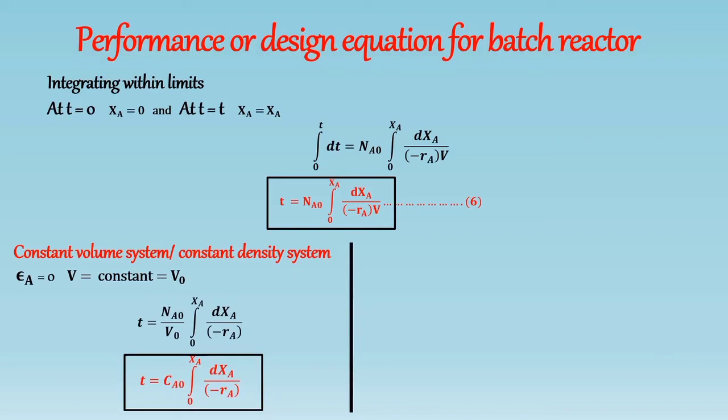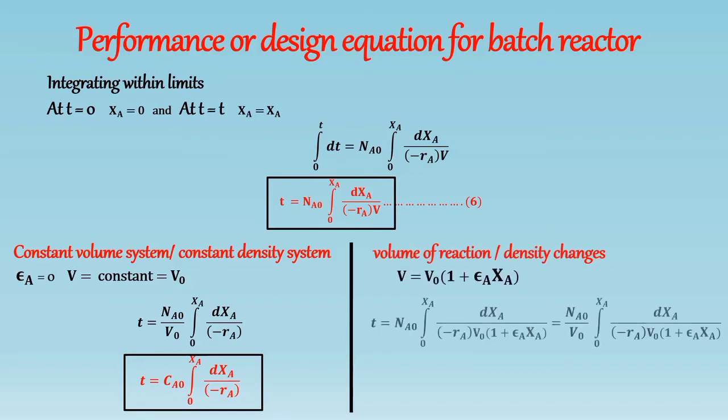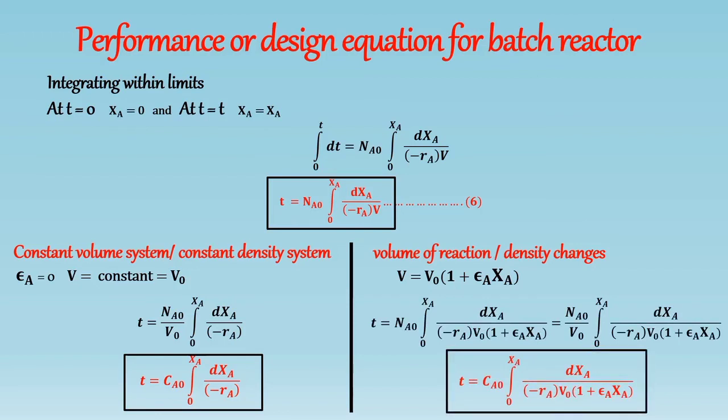Now for reaction in which the volume of reaction changes proportionally with conversion or density changes such as gas phase reaction, so hence V is not constant and V is equal to V0 into 1 plus epsilon A XA. Hence equation becomes... So this is the performance equation for the batch reactor for the variable volume or constant density system.